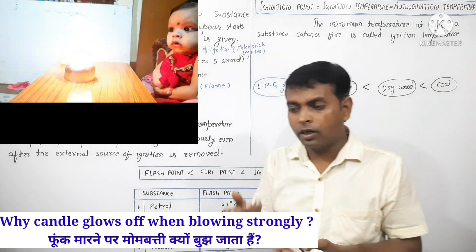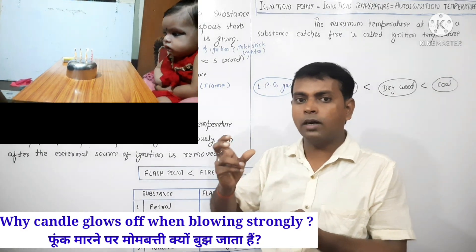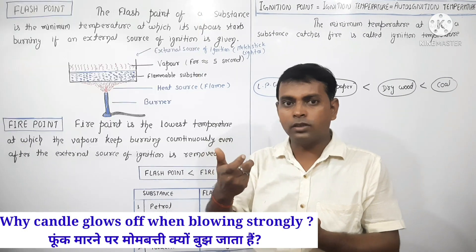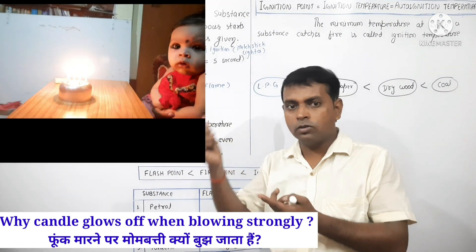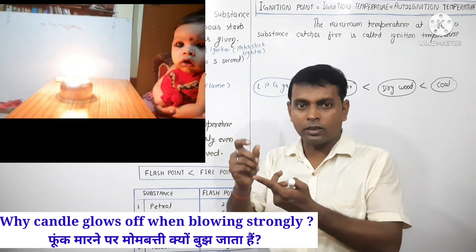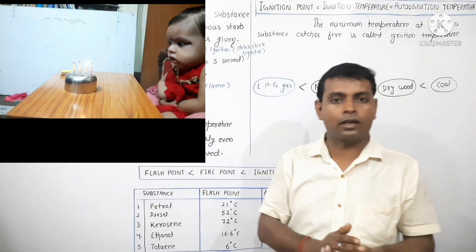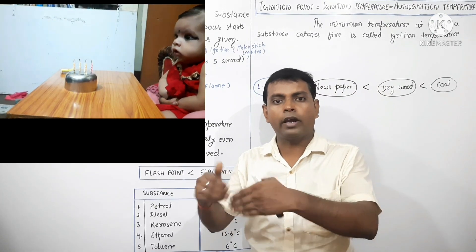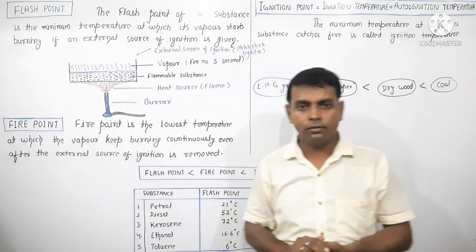Carbon dioxide comes from our mouth when we blow on a candle, and it makes a layer that removes the air contact. This is how fire extinguishers work as well — the CO2 removes oxygen contact, and finally the candle is extinguished.